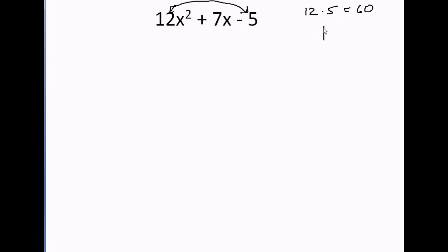Give me all the pairs that multiply together that equals 60. 1 times 60. 2 times 30. 3 times 20. 4 times 15. 5 times 12 is 60. 6 times 10 is 60. So these are all the 60s.